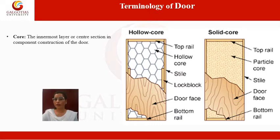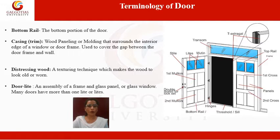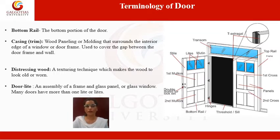Other visible parts include the lock block, door face, and bottom rail. The bottom rail is the bottom portion of the door. You can also see the casing. The bottom rail is clearly identifiable as the bottom portion of the door.